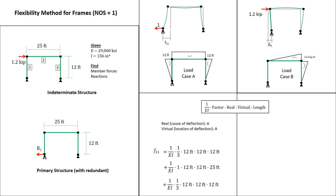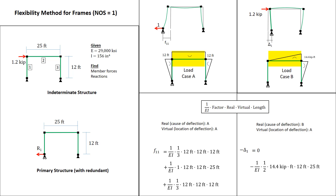Moving on to the calculation for delta 1. In this case, the real moment diagram — due to the force that causes the deflection — is load case B. The force causing the deflection is the applied load of 1.2 kips. The virtual moment diagram corresponds to the location where we want to compute the deflection, at the base of the structure, which corresponds to load case A. We have minus delta 1 because of the sign convention. For member 1, load case B has no moment, so that term goes to 0. For member 2, we have 1 over EI times 1.5 — the integration factor for a rectangle times a triangle — times the real moment of 14.4 kip feet, times the virtual moment of 12 feet, times the member length of 25 feet.